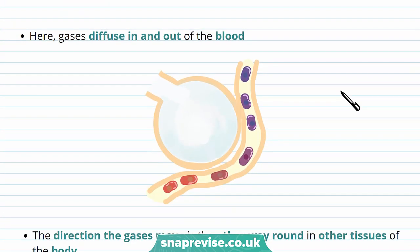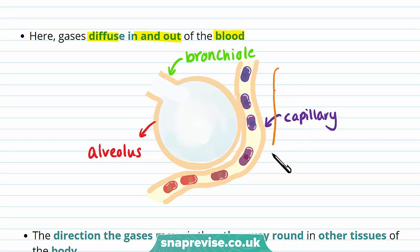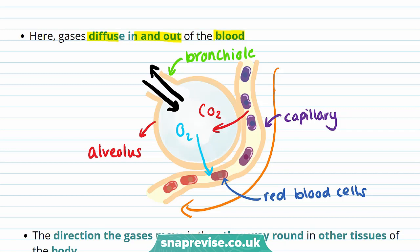So what happens during gas exchange? Gas is diffused in and out of the blood. In this diagram, this is a bronchiole, this is an alveolus, and this is a capillary — capillaries are tiny blood vessels that carry red blood cells. Air goes in and out of the alveoli. As blood in the capillaries has just come from the body, it has a high concentration of carbon dioxide. There is a low concentration of carbon dioxide inside the alveoli, so carbon dioxide diffuses into the alveoli. There is a high concentration of oxygen inside the alveolus, so it diffuses down the concentration gradient into the capillaries, allowing blood to transport oxygen to cells that need it for respiration.